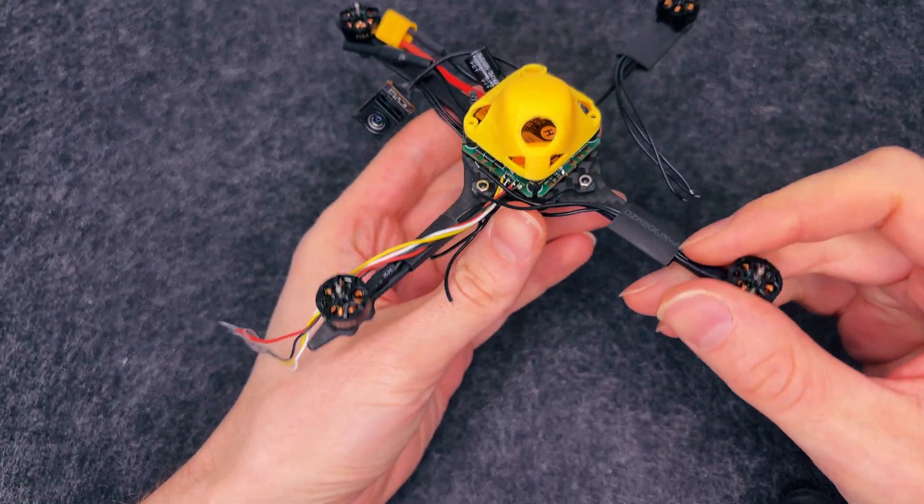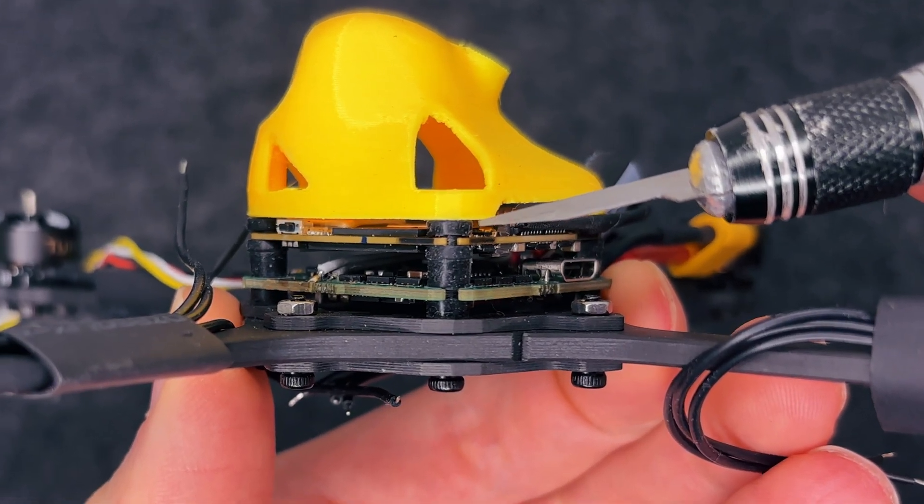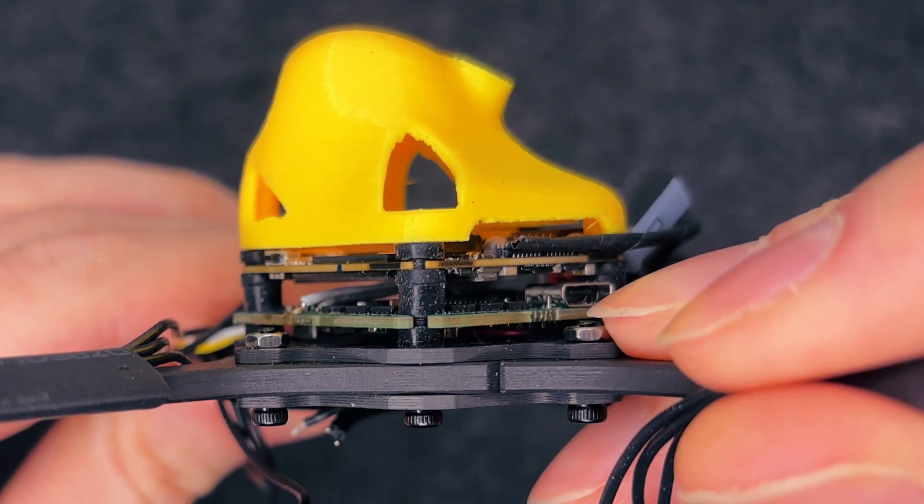And finally, double check that there's enough space between the FC and air unit. You do not want these touching, otherwise you're asking for a short circuit.